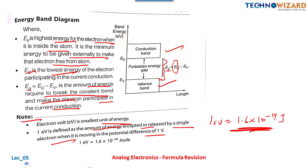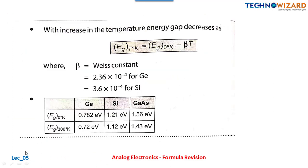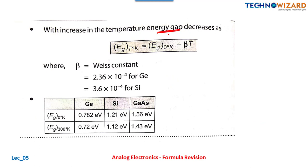What happens to the energy gap with an increase in temperature? The energy gap decreases. The formula is: Eg(T) = Eg(0) − βT, where Eg(0) is the energy gap at zero degrees Kelvin and β is a constant. For germanium, β = 2.36 × 10⁻⁴, and for silicon, β = 3.6 × 10⁻⁴. Please remember this.